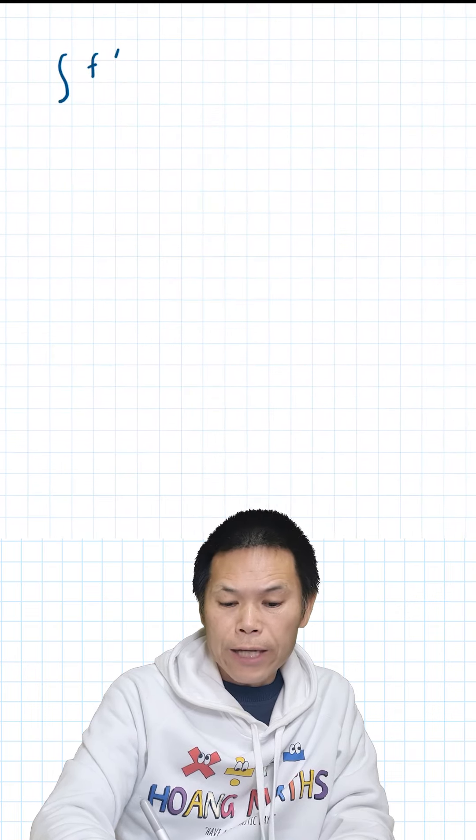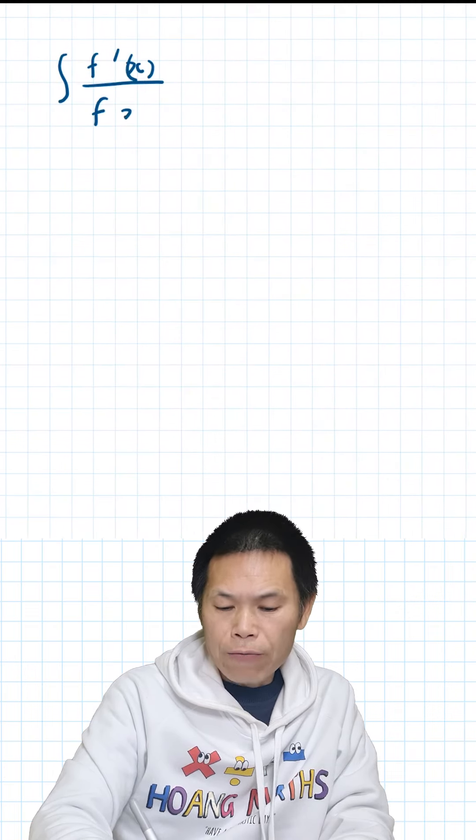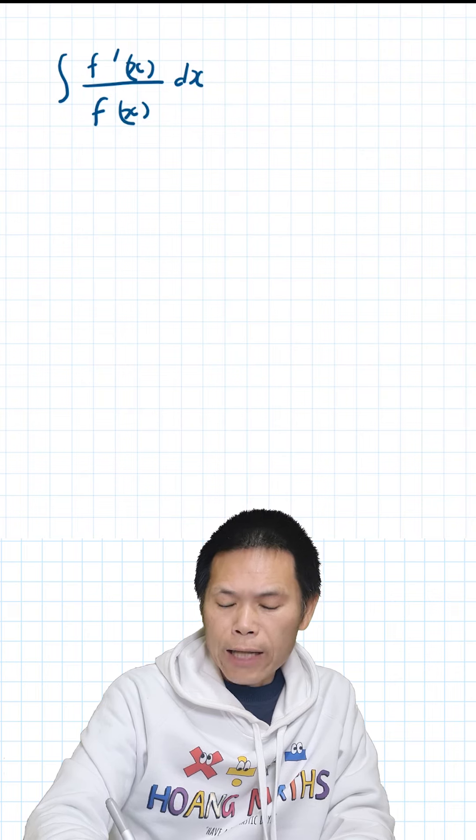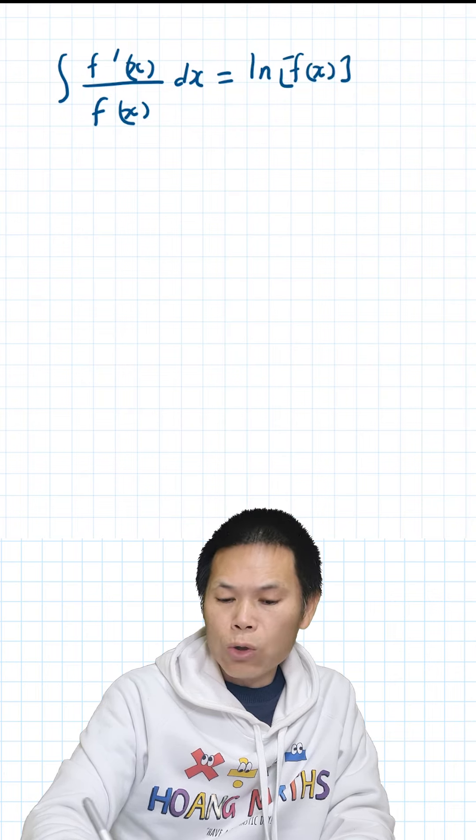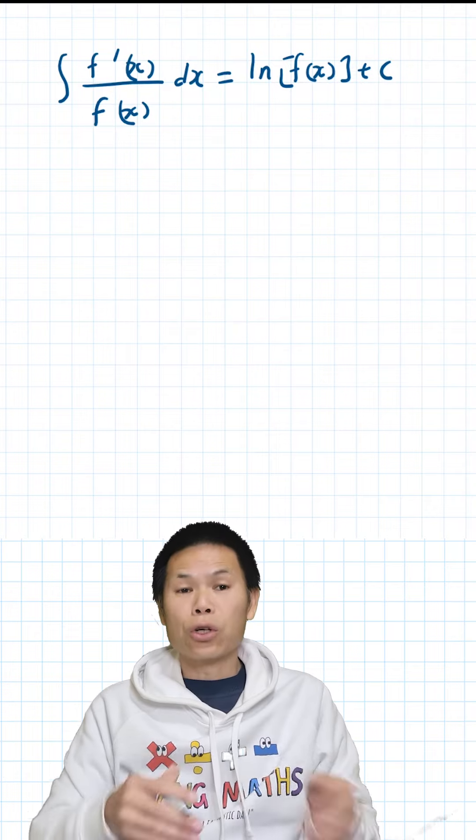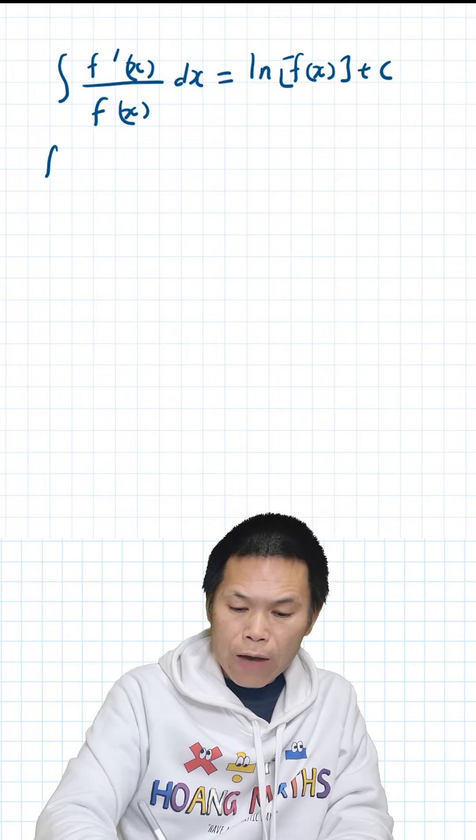If we integrate f dash x over f of x dx, that will give me ln of the function f of x, and of course we need to add a constant c.